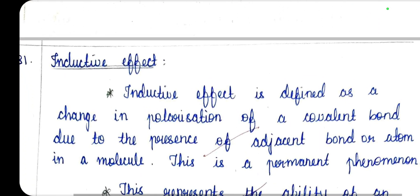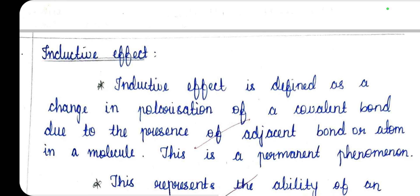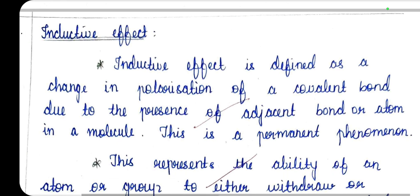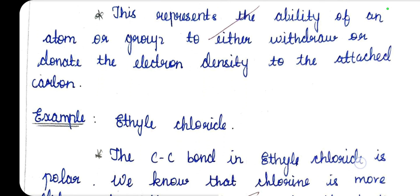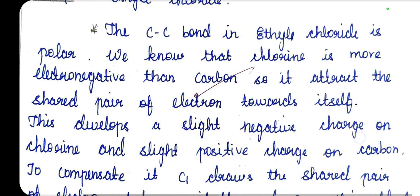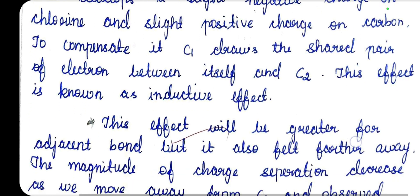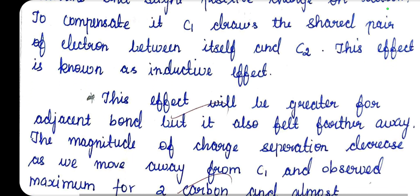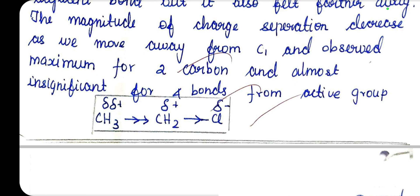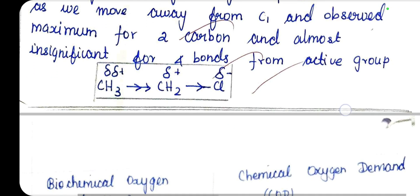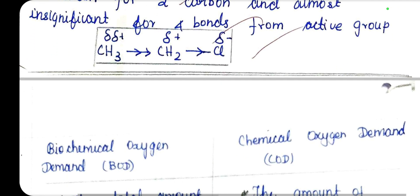Inductive effect: the first carbon C1 is delta plus; the second carbon C2 is double delta plus, representing a partial positive charge transmitted through the carbon chain.